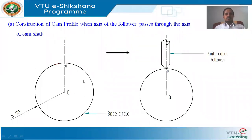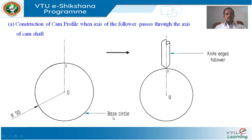Now we will see how to construct the cam profile. Condition A says: the axis of the follower passes through the axis of the camshaft. Before constructing the cam profile under this condition, first make sure what the base circle radius is. According to the given problem, the minimum radius of the cam is 50 millimeters. Using proper tools, draw a circle of radius 50 millimeters — this is the base circle. Mark the center (CG) of this circle and call it O.